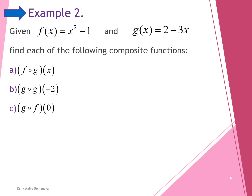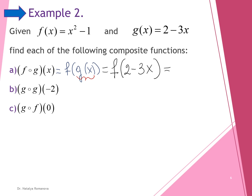For the second example, we have f of x equals x squared minus 1 and g of x equals 2 minus 3x. We write the composition as f of g of x. Our inner function is g of x, so we keep the outer function f and substitute 2 minus 3x in place of x. This gives us (2 minus 3x) squared minus 1.